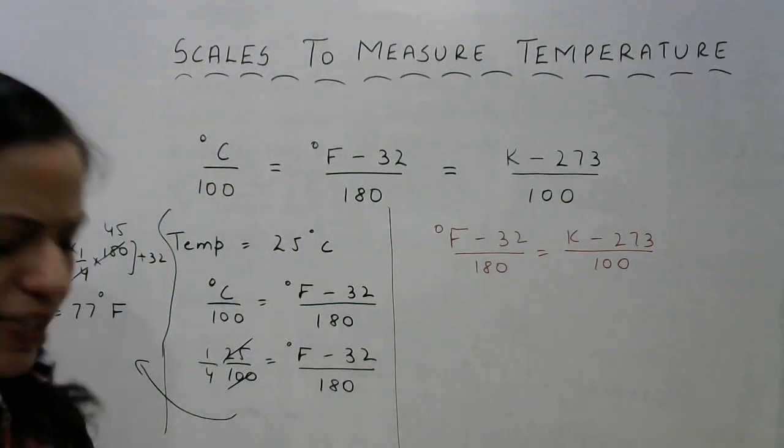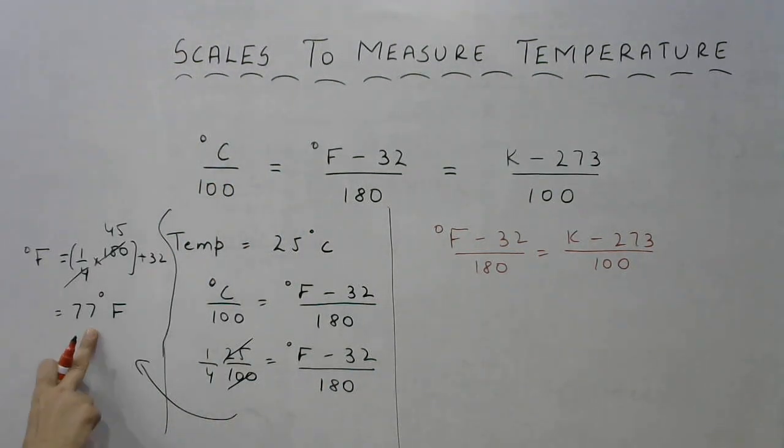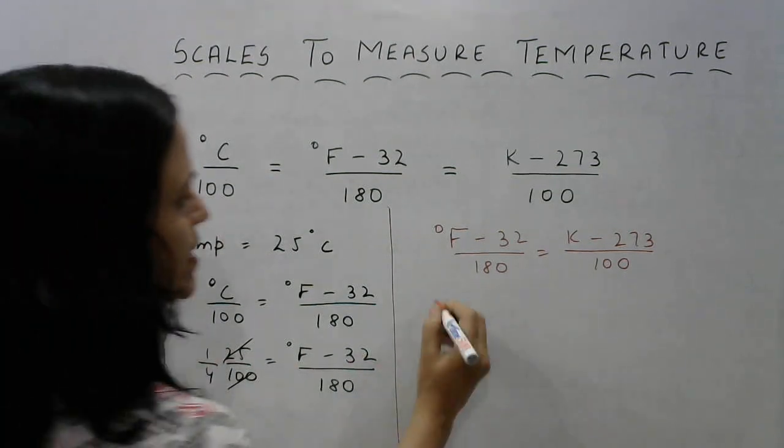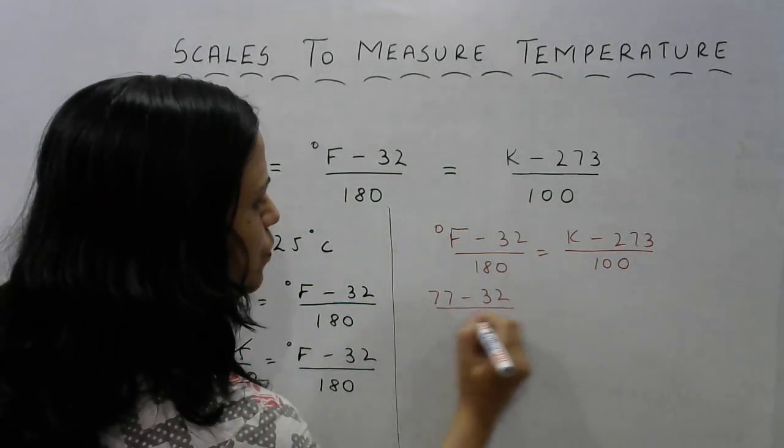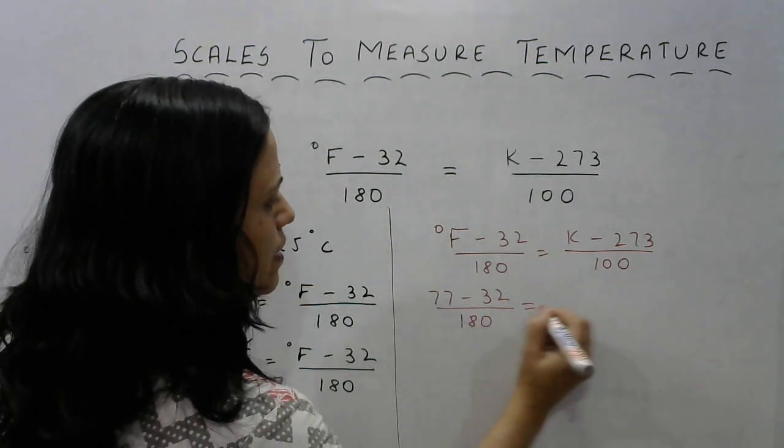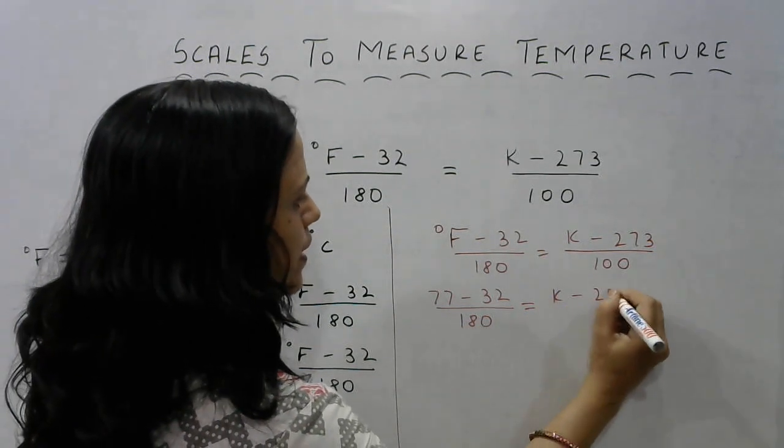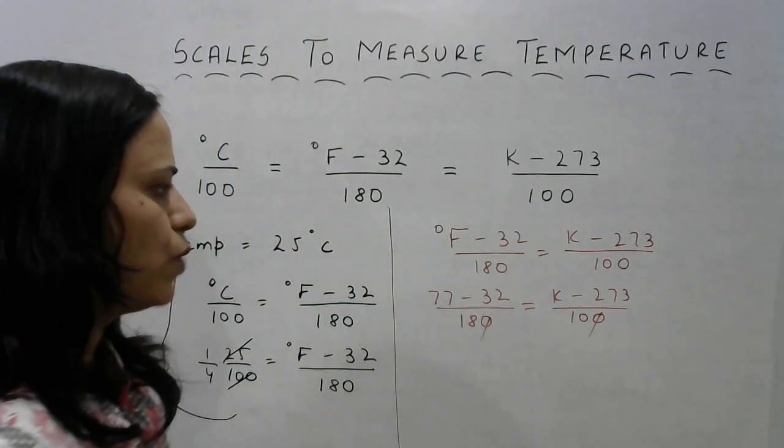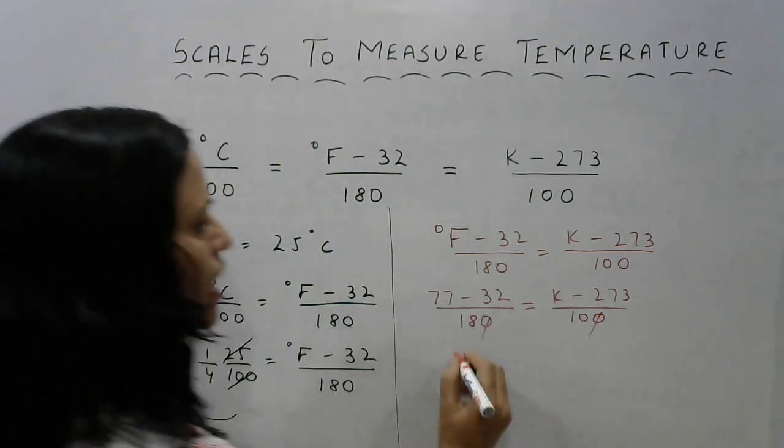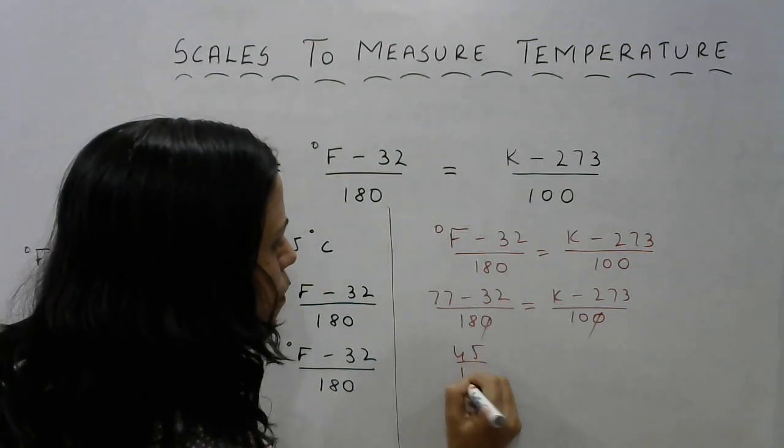So instead of degrees Fahrenheit, we will be writing 77 degrees Fahrenheit which we calculated just now. So this becomes 77 minus 32 upon 180 which gives you Kelvin minus 273 upon 100. So this zero cancels out. What are we left with? We are left with 45 upon 18.